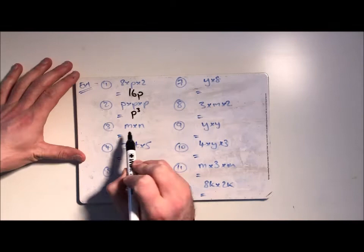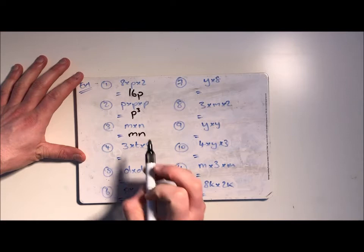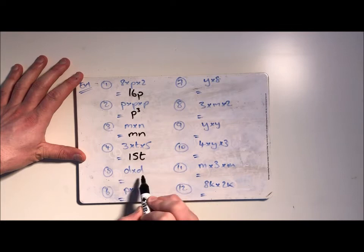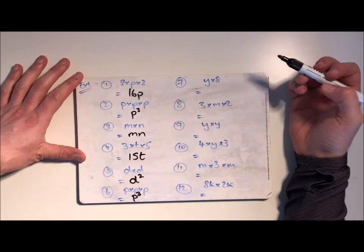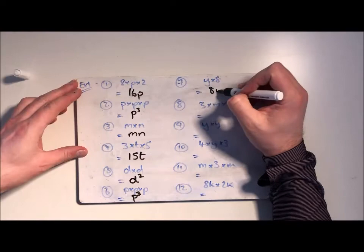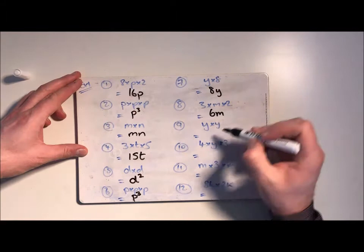This one you just squish them together so it's mn. We've got 3 times t times 5, so 3 fives are 15, 15t. d times d is d squared and p times p times p is p cubed. Now weirdly we've got that one repeated twice but that doesn't really matter, it was just a mistake in the questions. y times 8, you would always write the number first, so that's 8y. Again, squish them together with no gap between them. 3 twos are 6 times m.